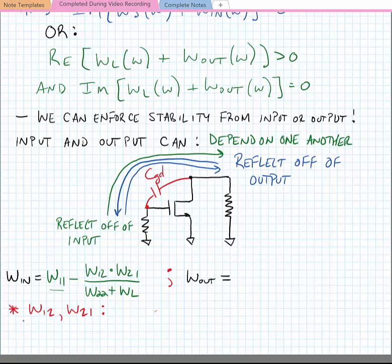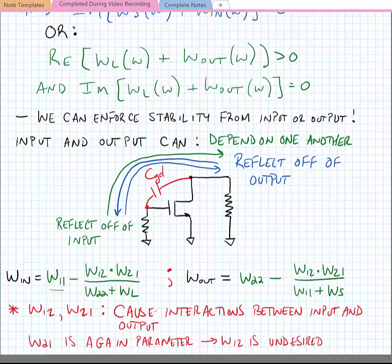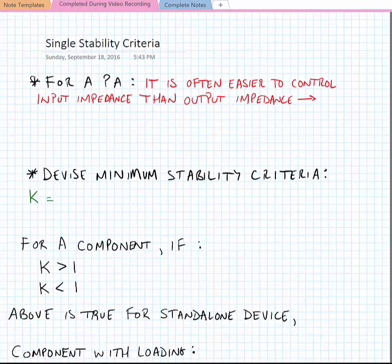Similarly we can find W_out. W_out is equal to W_22 minus W_12 times W_21 divided by W_11 plus W_s. In general, W_12 and W_21 cause interactions between the input and output. Now W_21 is a gain parameter that we're going to use in order to exploit the transistor as an amplifier, while W_12 is an undesired reverse gain.